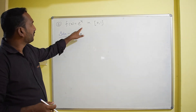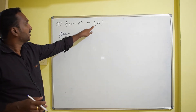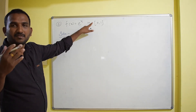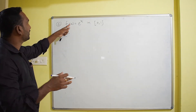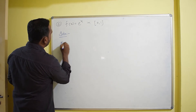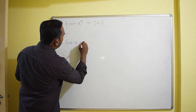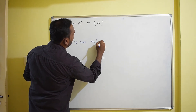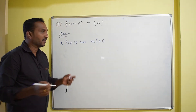First, we verify continuity. Substituting 0 gives a finite value; substituting 1 also gives a finite value. The exponential function is continuous everywhere, so f(x) = eˣ is continuous in the closed interval [0, 1].